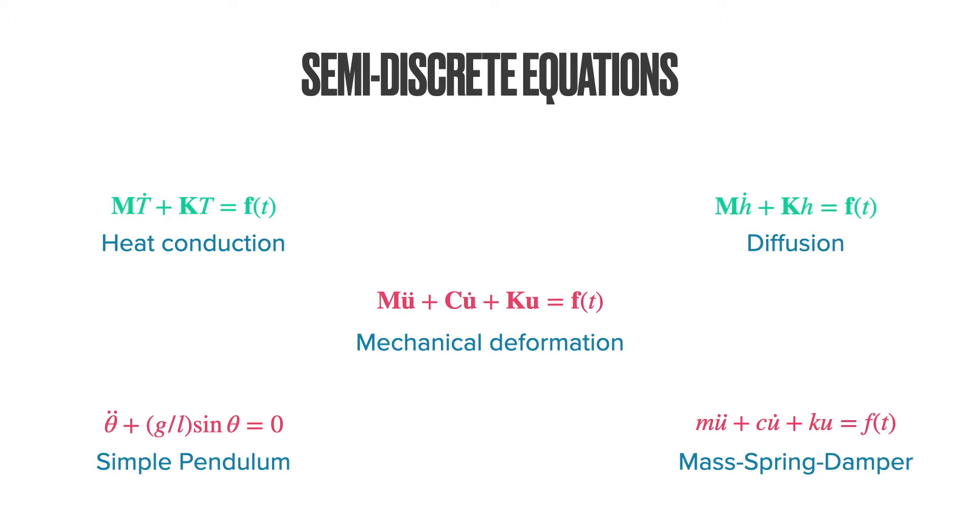Also shown in this slide is the governing equation of a simple pendulum in terms of the angle theta, g the gravitational constant, l the length, and on the right hand side we have the expression for the mass-spring damper where m is the mass, c is the damping, and k is the stiffness of the spring.